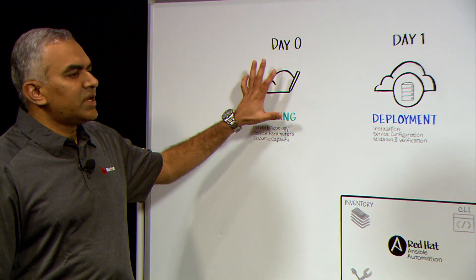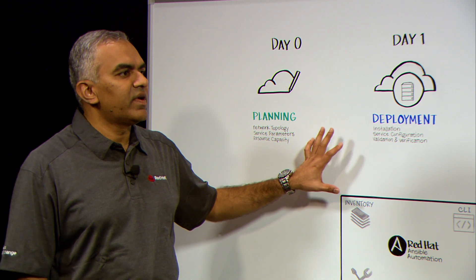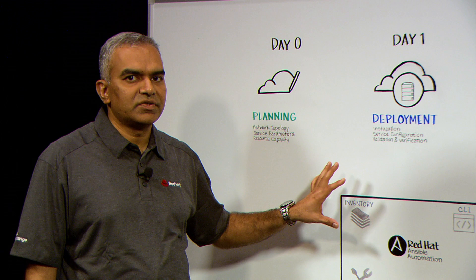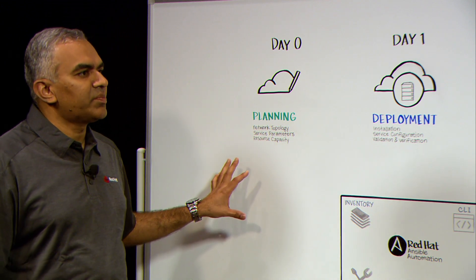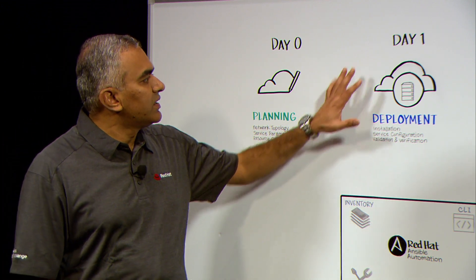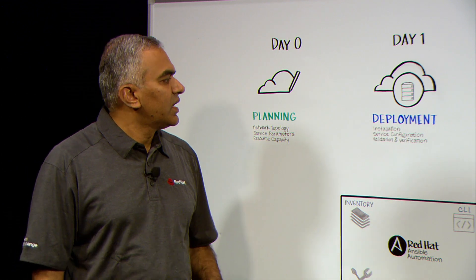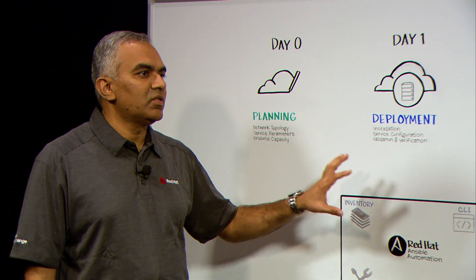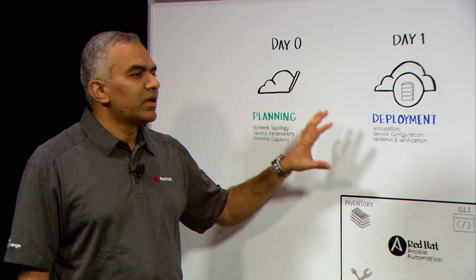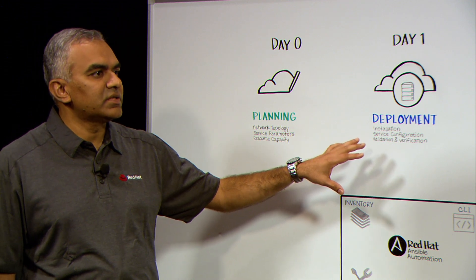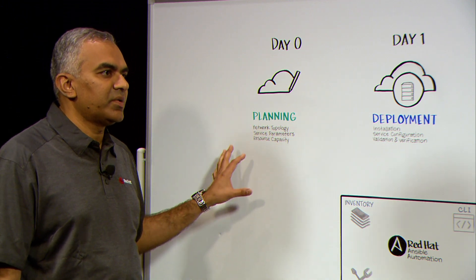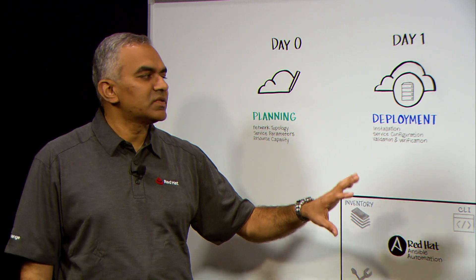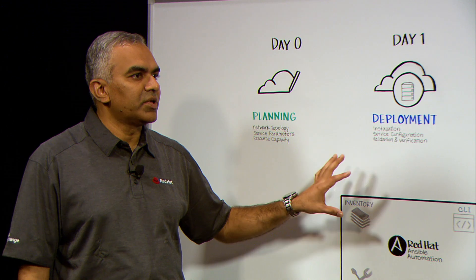Sure, Chuck. Day zero is our planning phase. This is where we verify our network topology, decide on our service parameters and definitions, and also look at our resource capacity — initial as well as ongoing. Day one is our deployment phase. This is where we actually do the installation of our infrastructure — physical, virtual, as well as cloud. Upon deploying the infrastructure, we deploy our services based on the configuration and the parameters we define, as well as doing validation and verification that our services and infrastructure are running in an optimal condition.